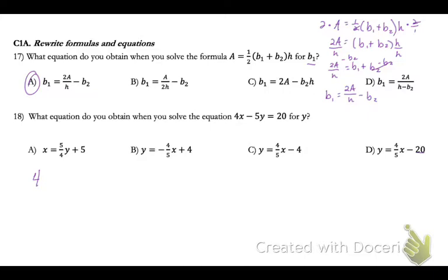18 says, what equation do you obtain when you solve the equation 4x minus 5y equals 20 for y? So I'm going to write that, and then I'm going to move everything over that doesn't have a y term in it. So I'm going to subtract my 4x and rewrite my equation.